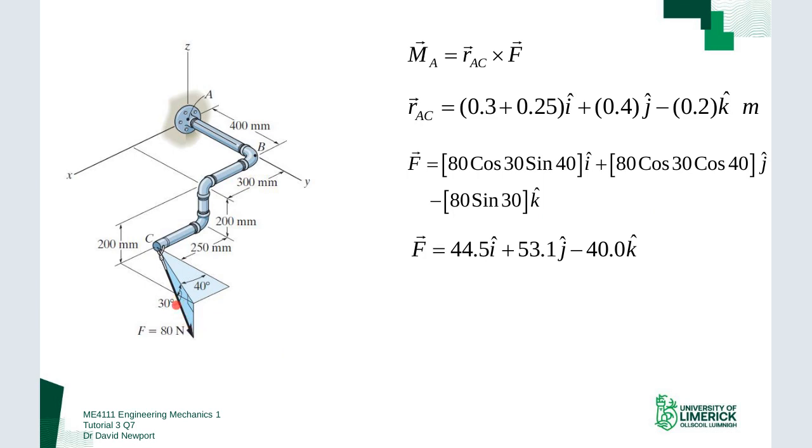The i-hat and j-hat components are a little bit more complicated. If I take the 80 cosine of 30, I get this component here. If I take this component and then do the cosine of 40, I would get this component—that'll give me the j-hat. And if I have 80 cosine 30 times sine of 40, I would get the i-hat component. So that's where I'm getting these values from.